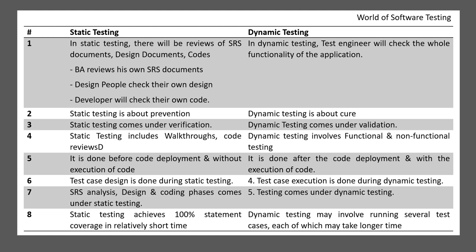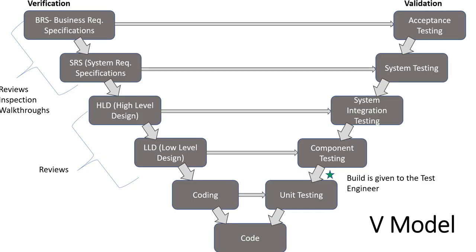Before going into the differences, let's understand the V-model again briefly. If you want to watch the complete video you can go to the playlist. On the left side you can see the verification part. First there will be a BRS - Business Requirement Specification, then SRS - System Requirement Specification, then high level design, then low level design, then coding, and in parallel to coding there will be unit testing.